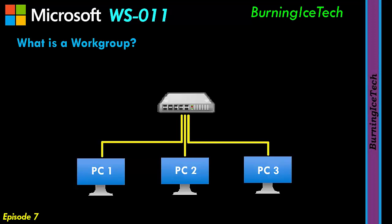All three of these PCs belong to individuals in that household. PC1 belongs to someone, PC2 and PC3 belong to someone, and each of them is going to be used by one individual only in most cases. So PC1 belongs to an individual called Joe, PC2 belongs to an individual called Bill, and PC3 belongs to an individual called Holly. Now, if you need to log on to a PC in a workgroup situation, you're not going to type in your username — you're probably going to click on the username you want to log on with. It's going to present you with a list of accounts available on that PC, usually just one.